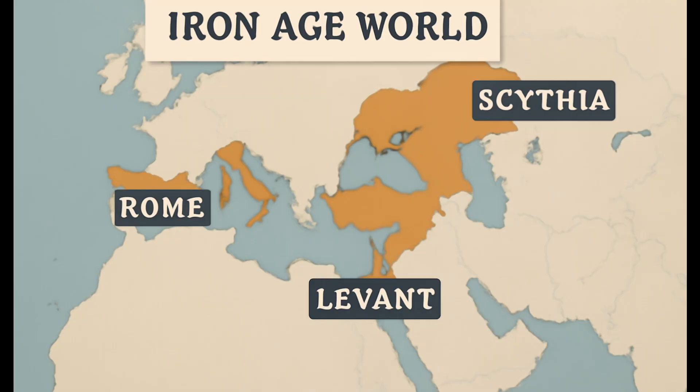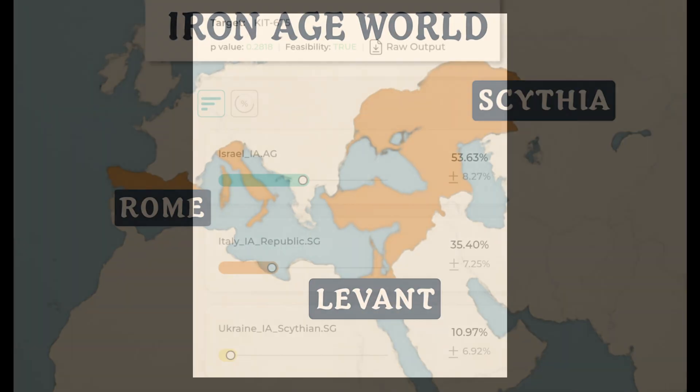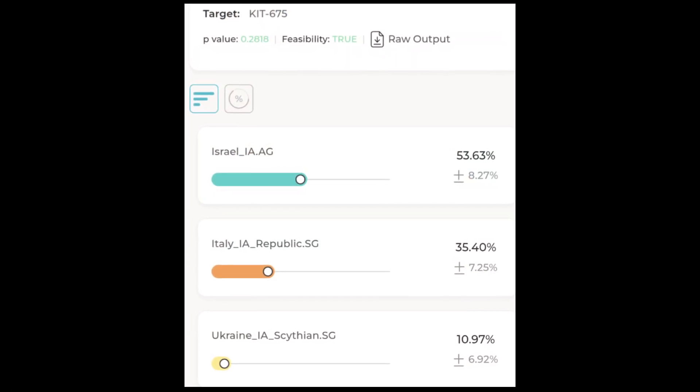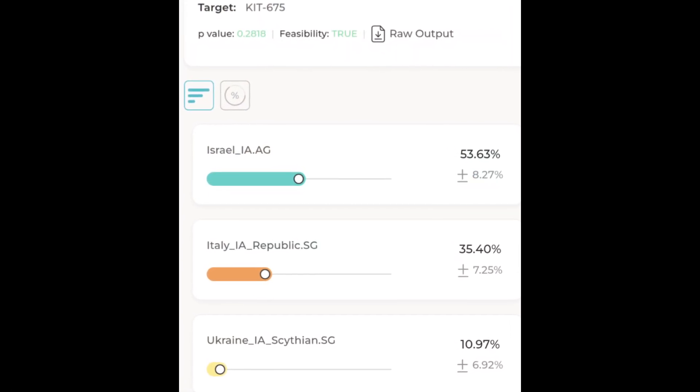This model shows my DNA as a mixture of three ancestral populations that align with what we know about Jewish history. About 54% comes from ancient Israelites, using Iron Age samples from the Southern Levant, labeled Israel-ia.ag.